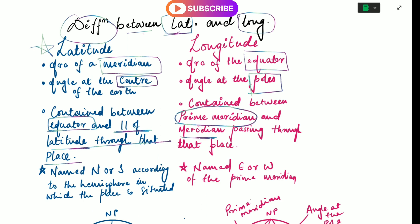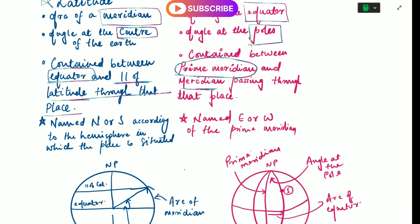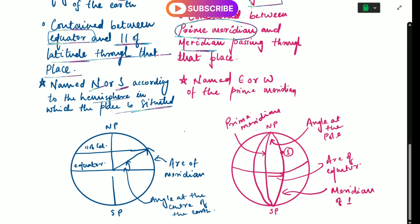In the picture given below, latitude is named north or south according to the hemisphere in which it is situated, so if it is in the northern hemisphere it is north, or if it is in the southern hemisphere it will be south. Similarly, the longitude is named east or west with respect to the prime meridian. This place is located east of the prime meridian, so its longitude will be east.